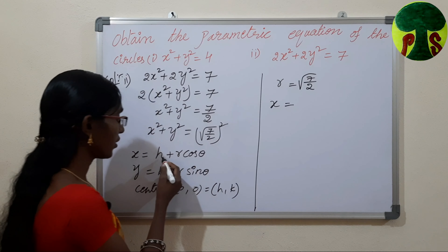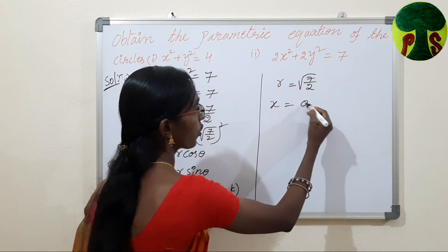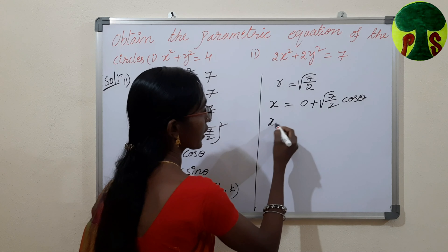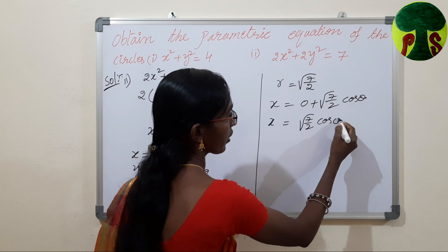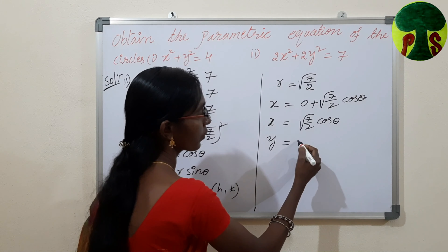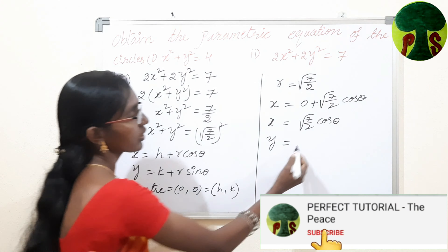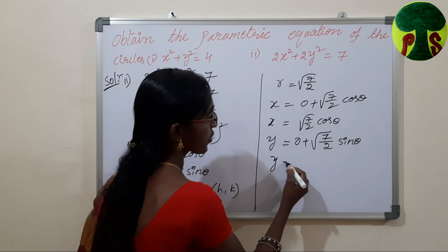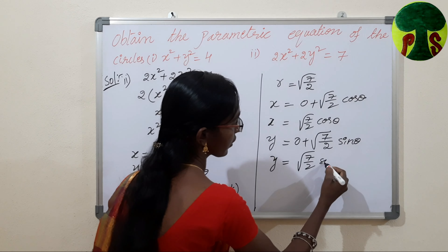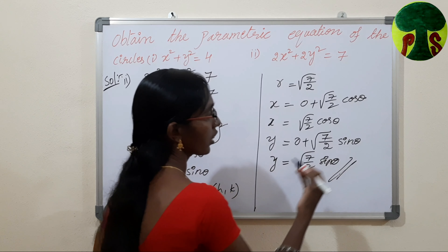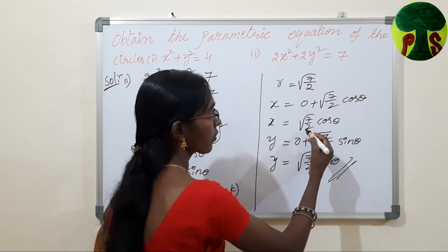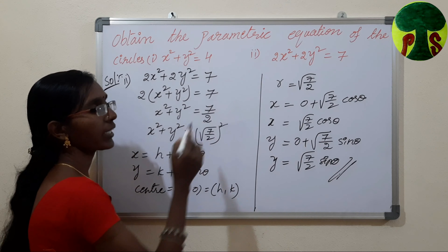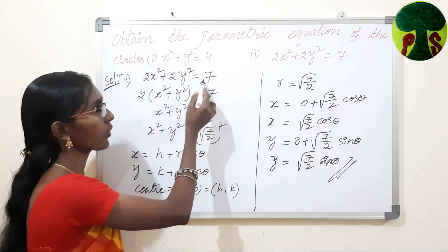Now we substitute h, k, and r in the parametric equations. x equals 0 plus root(7/2) times cos theta, so x equals root(7/2) cos theta. y equals 0 plus root(7/2) sin theta, so y equals root(7/2) sin theta. These are the parametric equations of the circle 2x squared plus 2y squared equals 7.